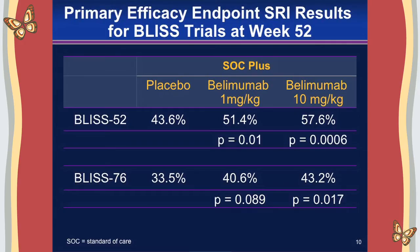The primary endpoint results using the SLE Responder Index showed that in both trials, the 10 mg/kg dose was statistically significantly better than placebo. In BLISS-52 it was 58% versus 44%, and in BLISS-76 it was 43% versus 33%. Only the 10 mg/kg dose met the primary endpoint in both trials; the 1 mg/kg dose was only statistically significant in the first trial.